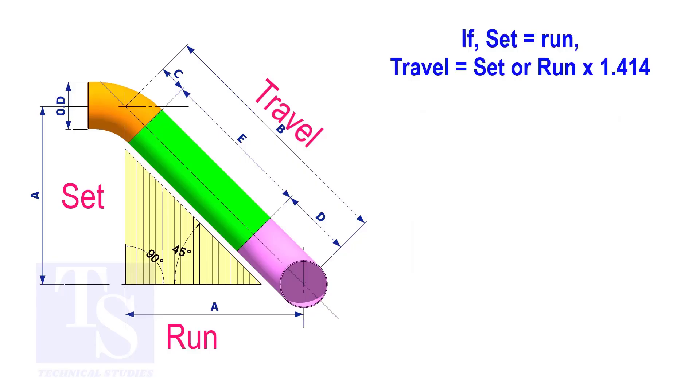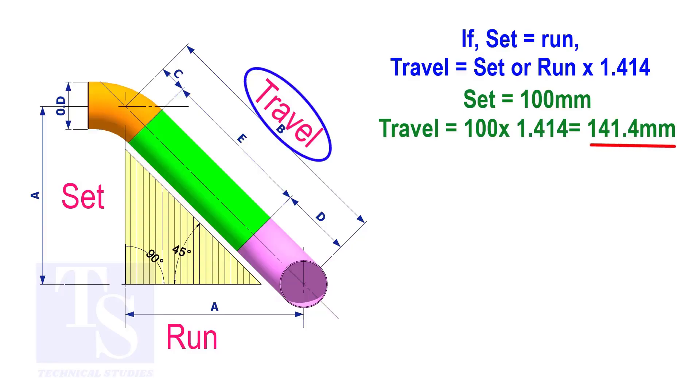Assume that the value of the set is 100. The value of the travel is 100 multiplied by 1.414 equals 141.4.